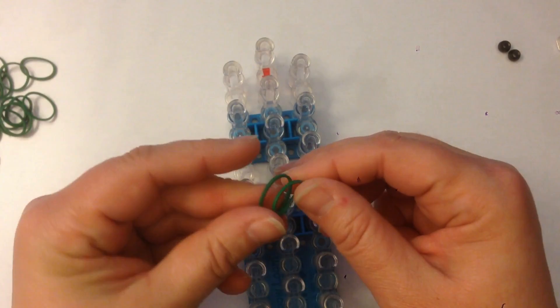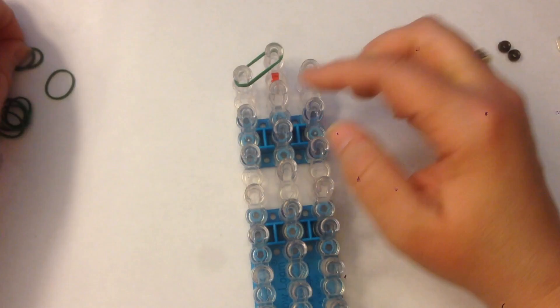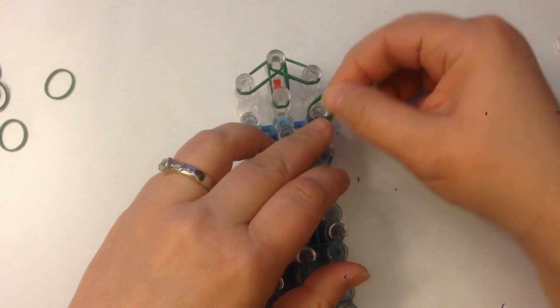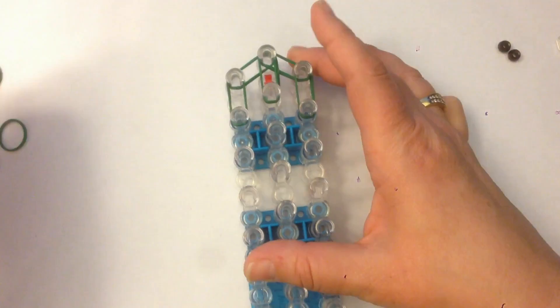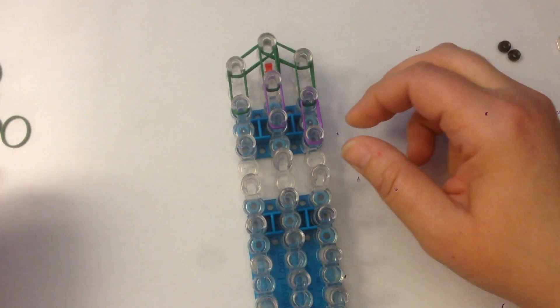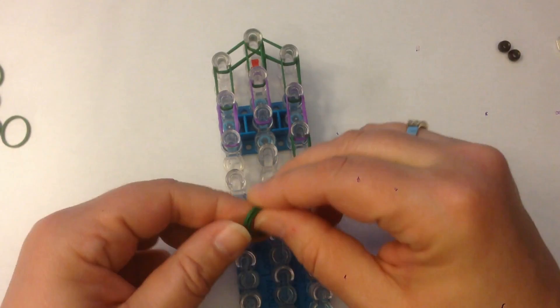We're going to be double banding, which means you take two bands and place them over the pegs at the same time as if they were one. Your arrow is facing towards you. If you don't have an arrow, your open side of the peg is facing towards you. All right, so we're going to get started here. I'm going to move to purple for his bandana. Then back to my dark green again.